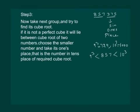Next, it states that if it is not a perfect cube, it will lie between the cube root of 2 numbers. Choose the smaller number. So, our smaller number is 9. So, we choose 9.